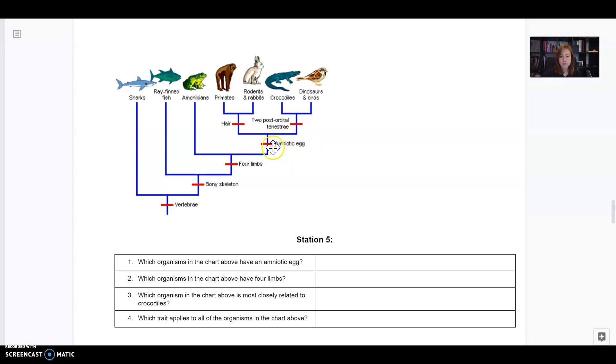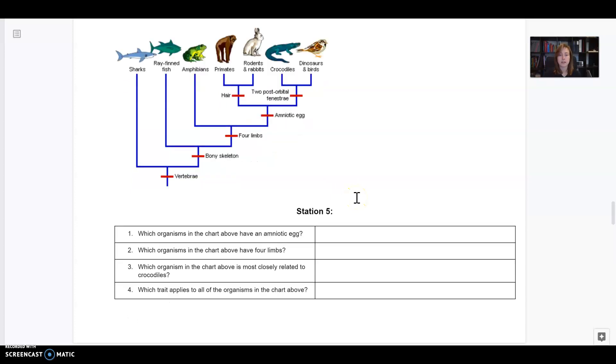This is showing us when an amniotic egg evolved. So everything behind it does not have an amniotic egg, but everything in front of it does. So from amniotic egg, I'm going to trace forward and I hit primates. Trace forward again and I hit rodents and rabbits. Trace forward again and I hit crocodiles. Trace forward again and I hit dinosaurs and birds. That means all four of these groups of animals have an amniotic egg.